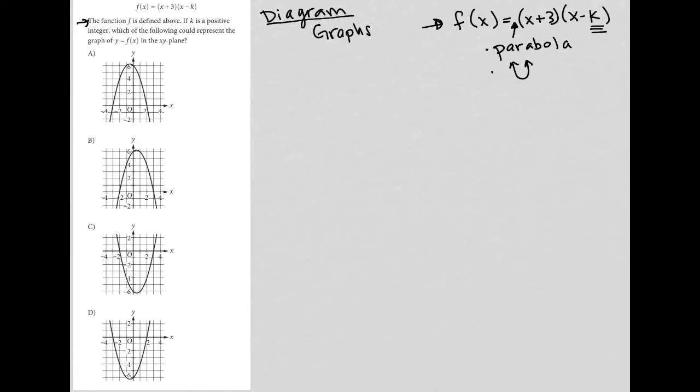And the third thing here is while we do not know the k value, we do see this positive three here, which actually does tell us that the x-intercept, or at least one of the x-intercepts, is equal to negative three. So this information within itself will help us find the answer.